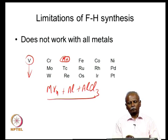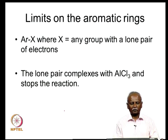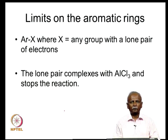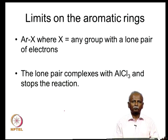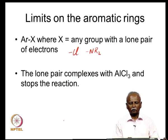Apart from limitations in the metal, there are also limitations on the type of aromatic rings that can be used. Whenever there is a substitution on the aromatic ring with a lone pair, it tends to coordinate to the aluminum and stops the AlCl3 from functioning. As a result, you cannot use aromatic compounds which have lone pairs of electrons — that means chloro groups and NR2 groups cannot be used as substituents.